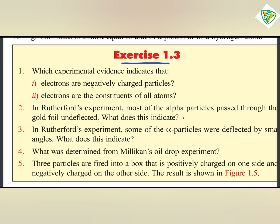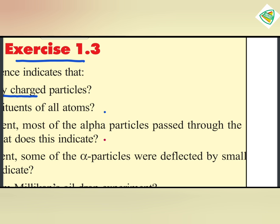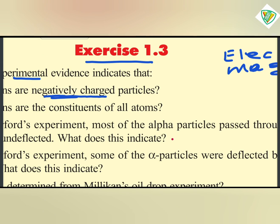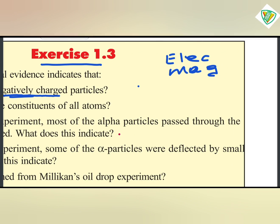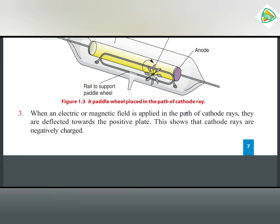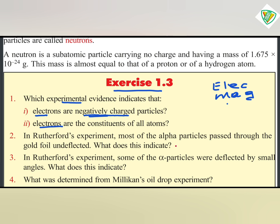Experimental evidence indicates that electrons are negatively charged particles. Electrons are deflected by electric and magnetic fields, confirming they are negatively charged.